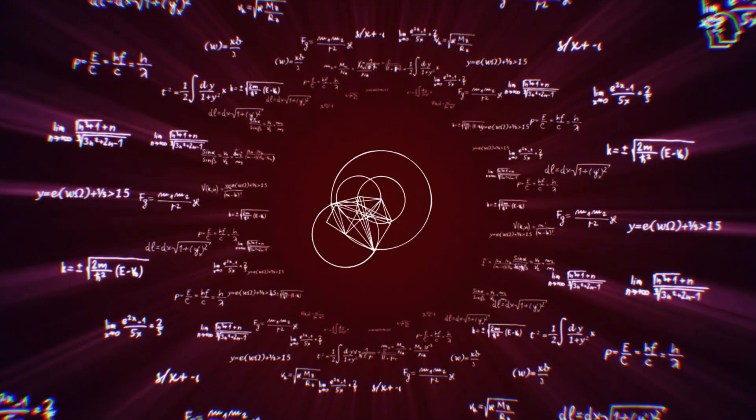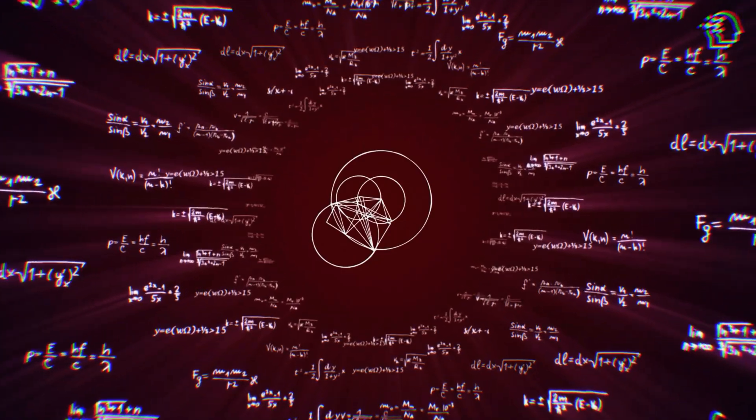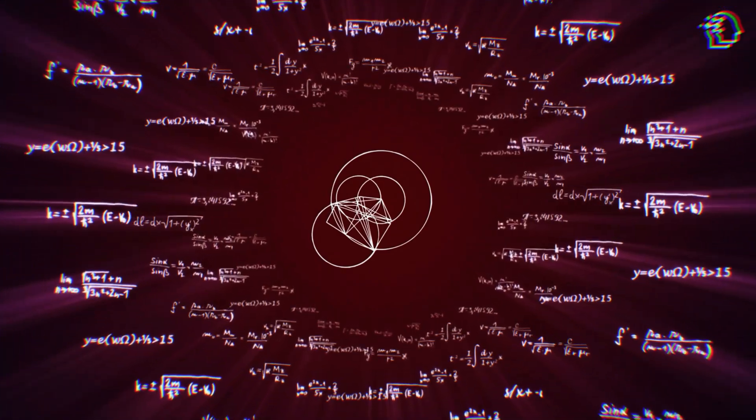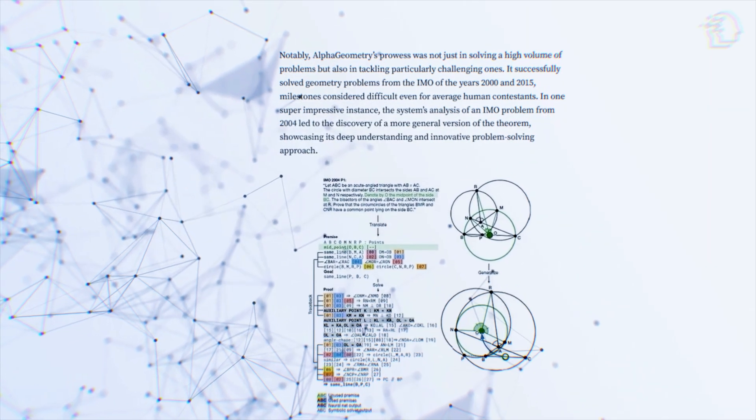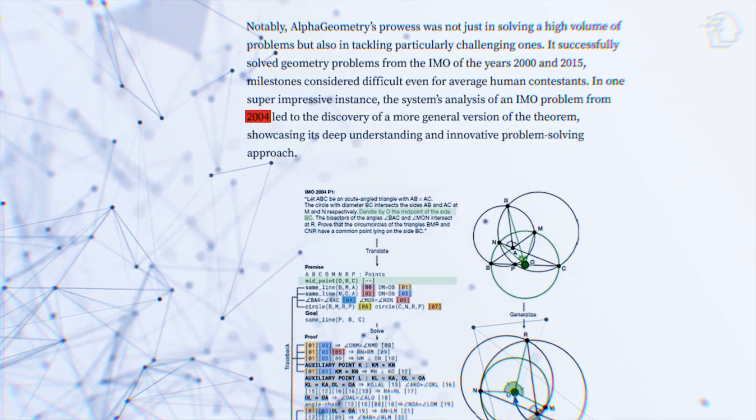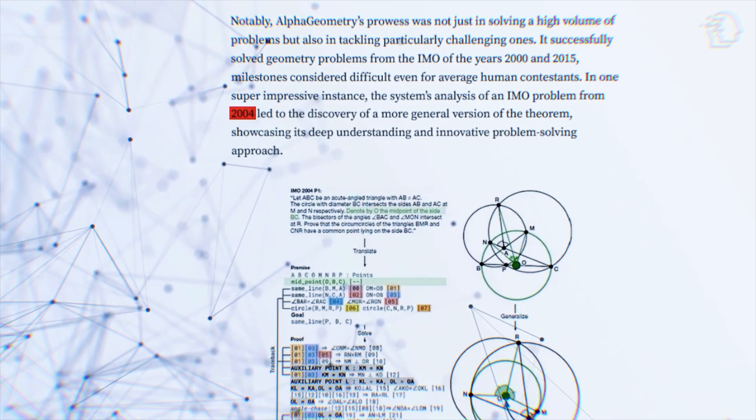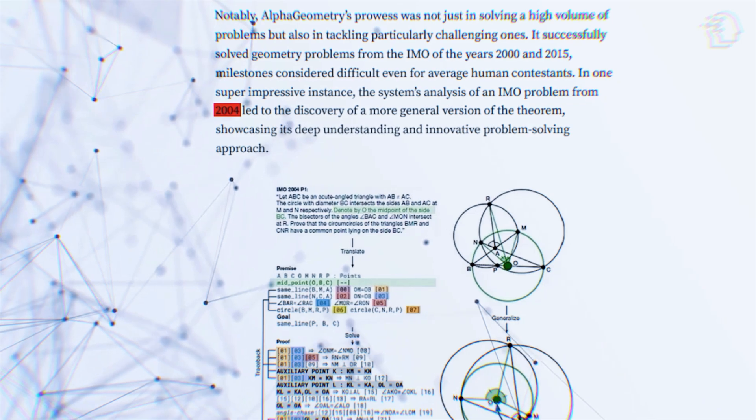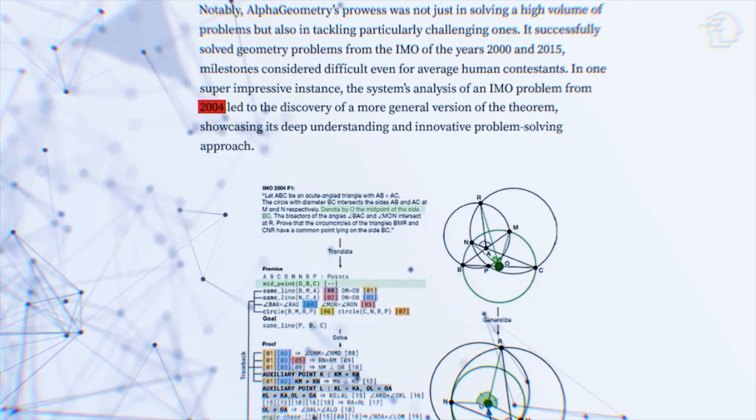The real testament to AlphaGeometry's genius is its knack for solving what seemed unsolvable. For instance, it dissected a notoriously difficult 2004 IMO problem and unearthed a more generalized theorem. This isn't just problem solving. It's groundbreaking innovation.